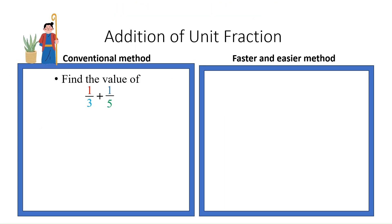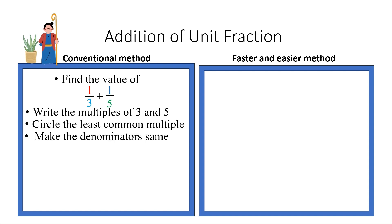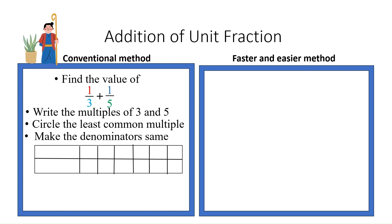Addition of unit fractions. I have divided these into two parts: conventional method and faster and easier method. Find the value of 1/3 plus 1/5. Write the multiples of 3 and 5, circle the least common multiple, and make the denominators the same.